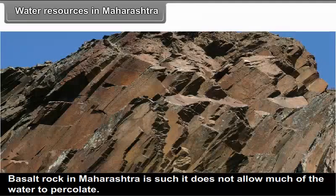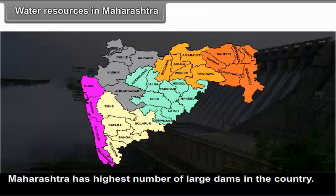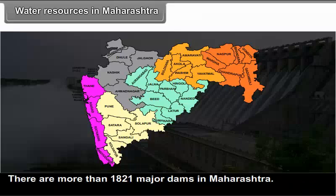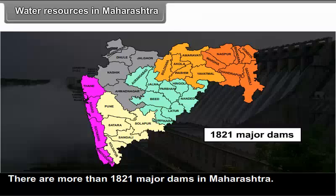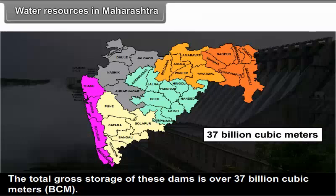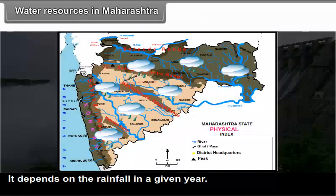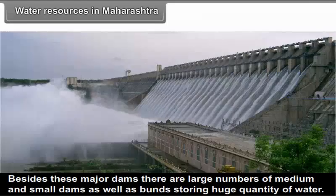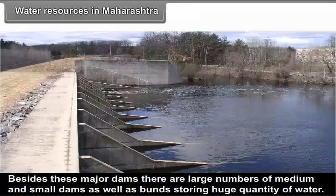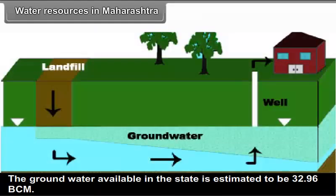Basalt rock in Maharashtra is such that it does not allow much water to percolate. Dams having a height of 10 meters and above are called large dams. Maharashtra has the highest number of large dams in the country — more than 1,800 major dams. The total gross storage of these dams is over 37 billion cubic meters, though the actual storage each year depends on rainfall. Besides these major dams, there are large numbers of medium and small dams as well as bunds storing huge quantities of water. The ground water available in the state is estimated to be 32.96 BCM.